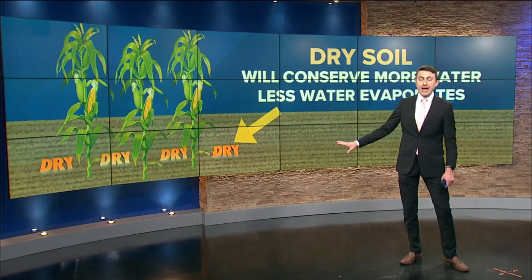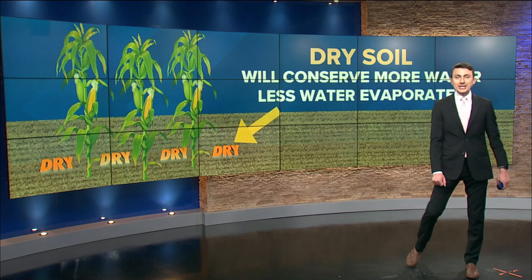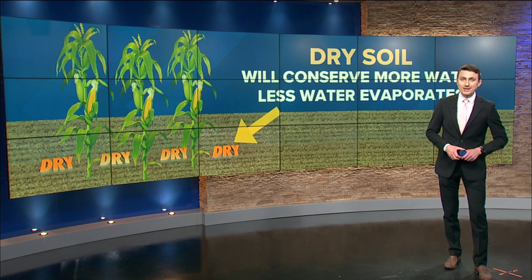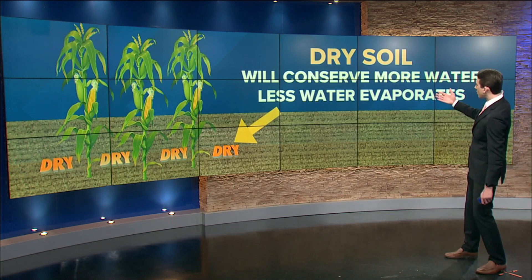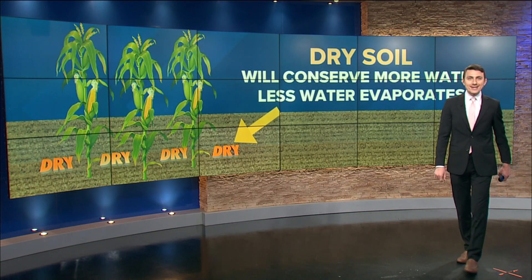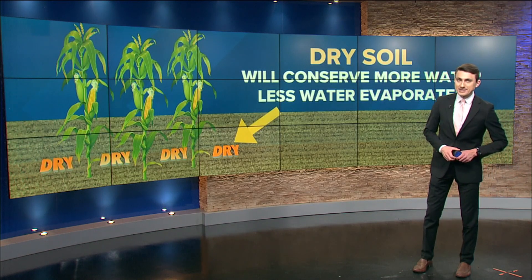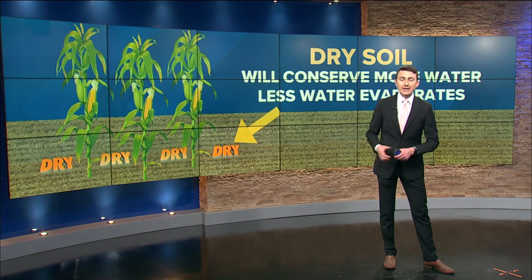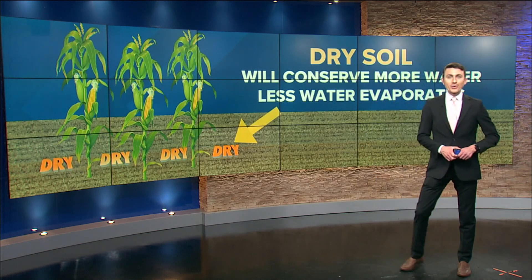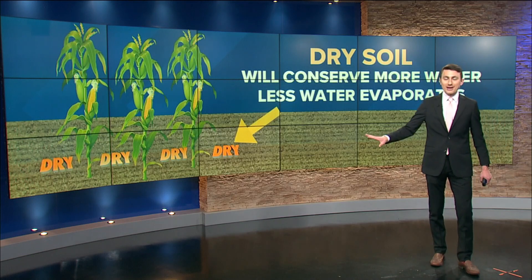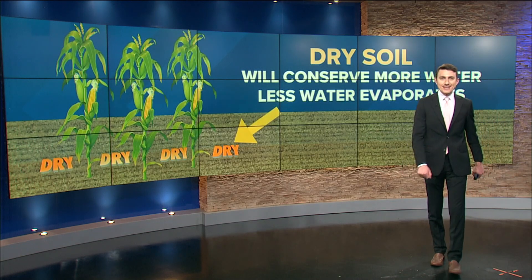Now, if the soil is brown and dry — and I know this time of year many folks have had a dry summer so far — dry soil will conserve more water and cause less water to evaporate. That intuitively makes sense: if it's been dry and the irrigators aren't running, the soil needs to retain that moisture for the growth of the corn crops. A dry brown soil generally means less evapotranspiration.